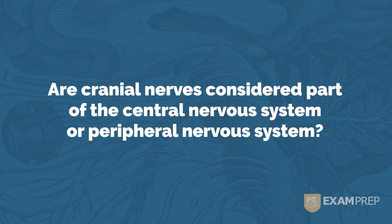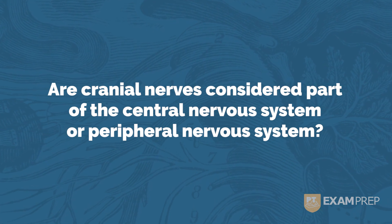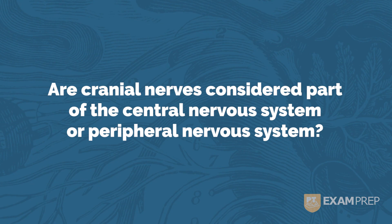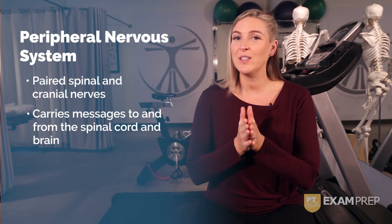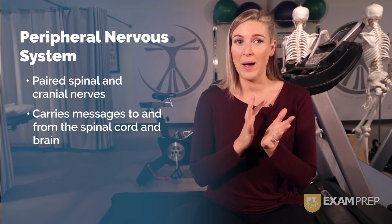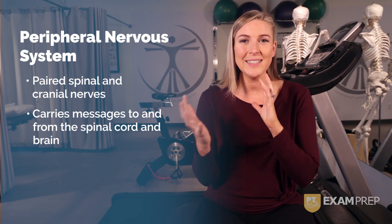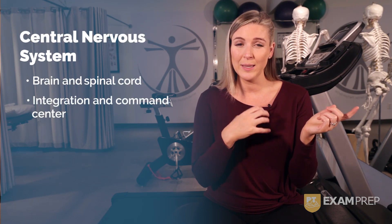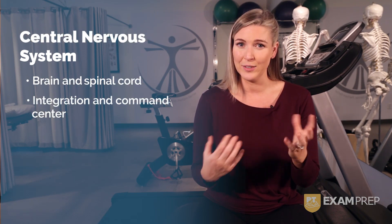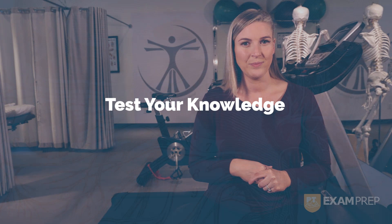Let's test your knowledge: are cranial nerves considered part of the central nervous system or the peripheral nervous system? The answer is the peripheral nervous system. The peripheral nervous system is composed of paired spinal and cranial nerves, and it sends messages to and from the spinal cord to the brain. The central nervous system — the brain and spinal cord — is really the command center. So when you think of cranial nerves, think peripheral nervous system.